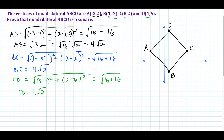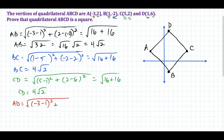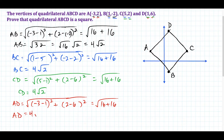I've done this for three sides and have to do one more. Targeting the last side AD: square root of negative 3 minus 1, squared, plus 2 minus 6, squared. This simplifies to negative 4 squared plus negative 4 squared, which is 16 plus 16 under the square root, telling us AD is equal to 4 square root of 2. But we have to be careful here — showing all four sides are equal in measure only proves this quadrilateral is a rhombus. So let's first say that ABCD is a rhombus because all four sides are equal in measure.